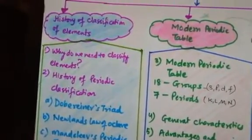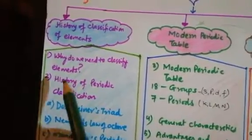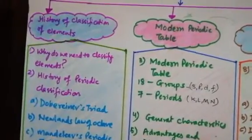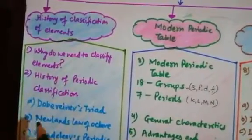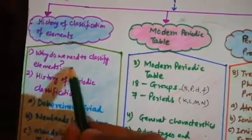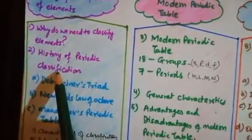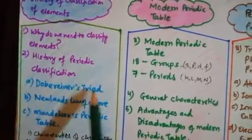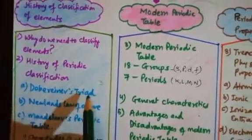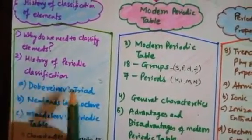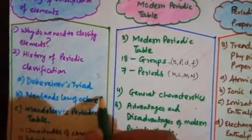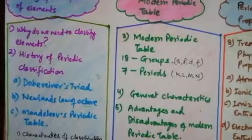History of classification covers when the classification of elements started. The first question is: why do we need to classify elements? We will find the answer to that. Then, the history of periodic classification — first was Dobereiner's Triads, where John Dobereiner classified elements in groups of three. Due to limitations, the next scientist, Newlands, gave the Law of Octaves — 'octave' meaning eighth. The numbers three and eight share a common relationship we will discuss in detail.